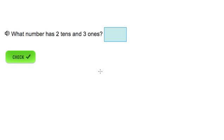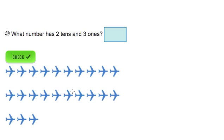What number has two tens and three ones? So let's go ahead and look at some airplanes here and we're going to go ahead and count them out. So we have one, two, three, four, five, six, seven, eight, nine.